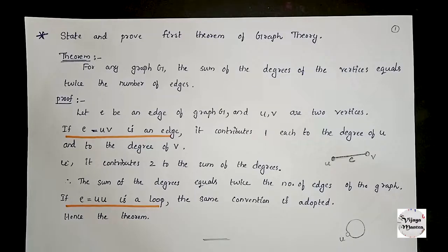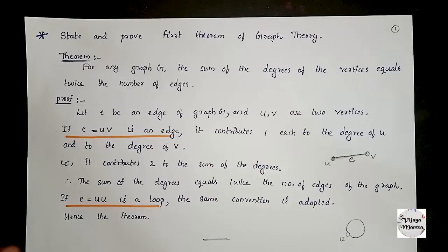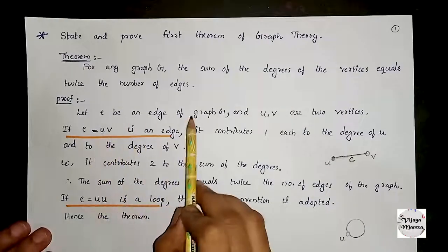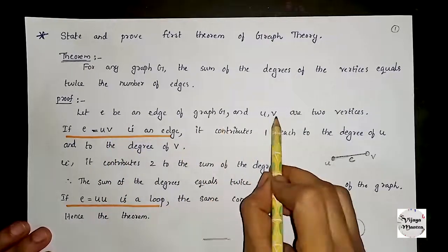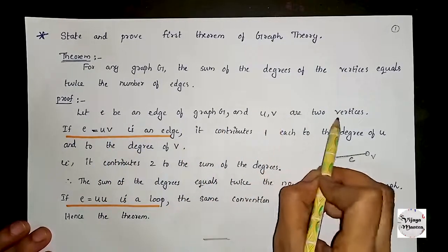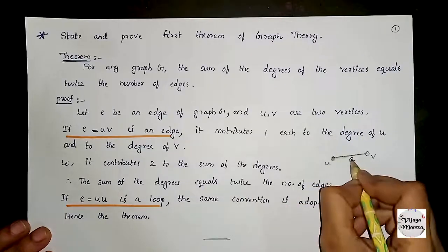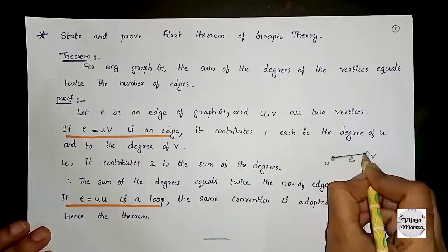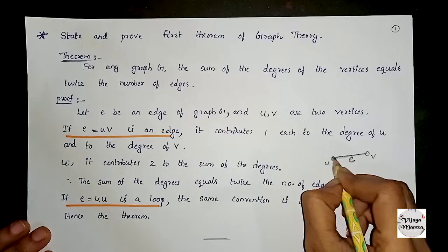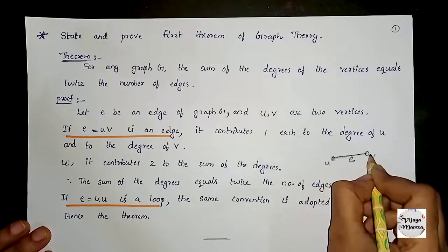This is the proof. Let e be an edge of graph G and u, v are two vertices — the end vertices of this edge. The end vertices are u and v.